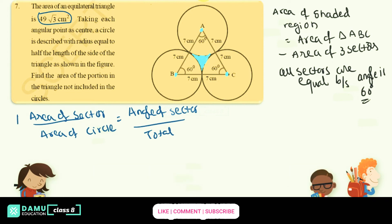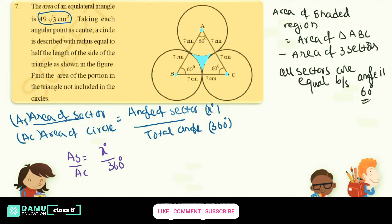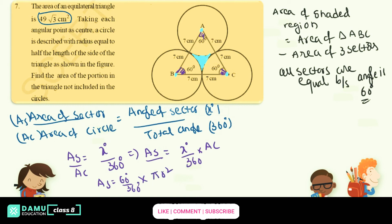The angle X here is 60 degrees, and the radius is 7. So area of sector = (60/360) × π × 7². This gives (1/6) × (22/7) × 49, which simplifies to 22 × 7 / 6 = 154/6 = 25.66 cm².